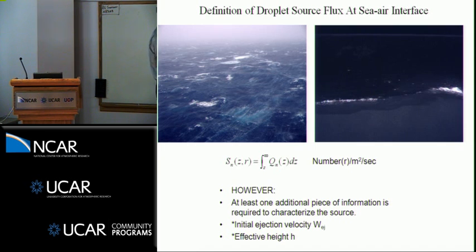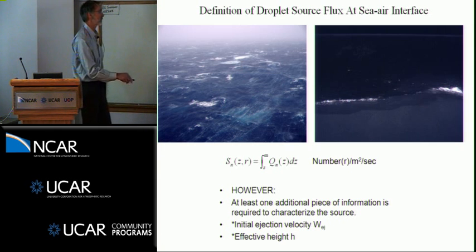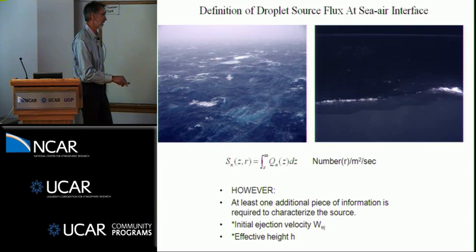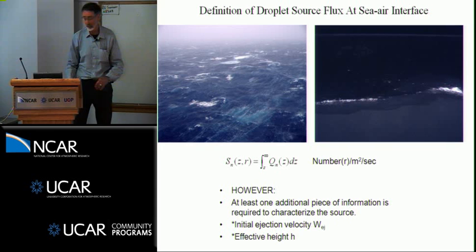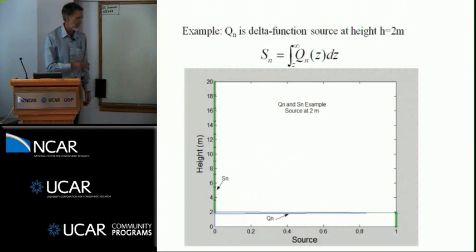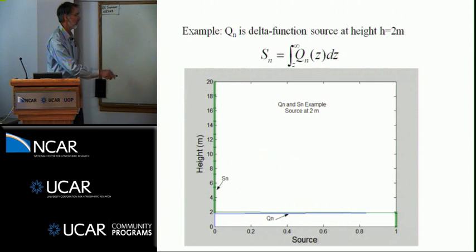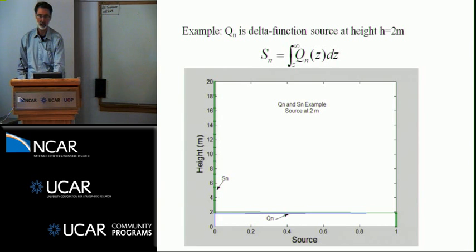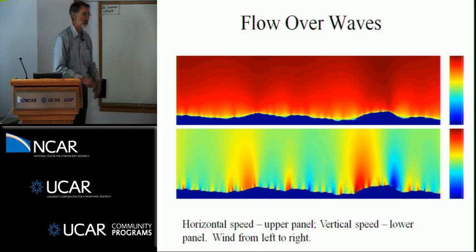The source function is an area flux, so it's really an integral of a volume source function. You need at least one other characterization besides the number of droplets per unit area per second produced — either the effective height such as wave height, or perhaps an initial ejection velocity. In the simplest possible case with a delta function source, the integral gives a constant flux and then nothing above that. Everything we do in sea spray is highly simplified because we don't know the details.